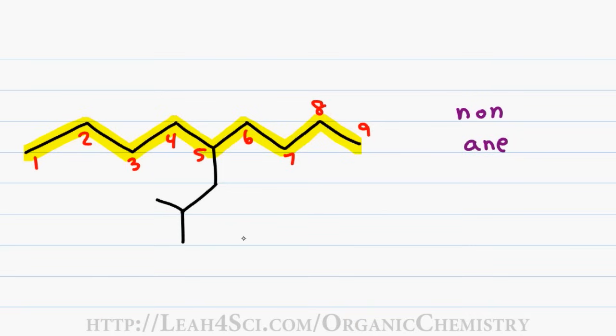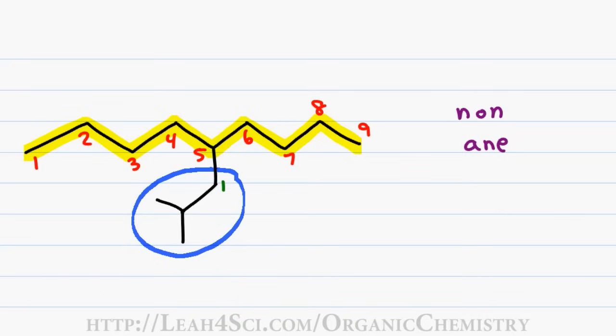This molecule gets tricky when you look at the substituent. If we only had the straight chain with 3 carbons as a substituent, this would be a propyl. However, we have a branch coming off the molecule which changes the rule slightly. When naming a substituent, you treat it almost as if it's a new molecule, starting by identifying the parent chain on the substituent where carbon number 1 is the carbon attached to the parent chain.